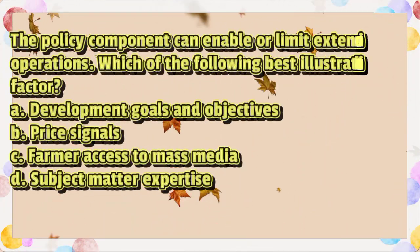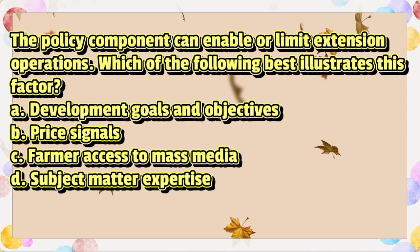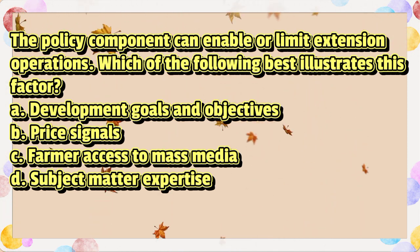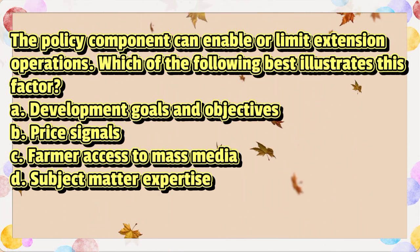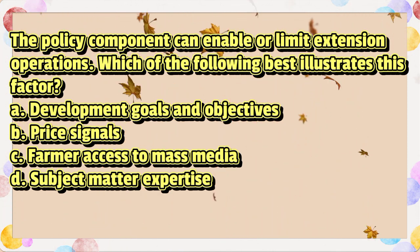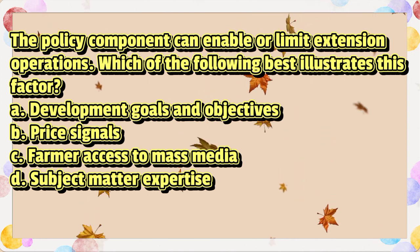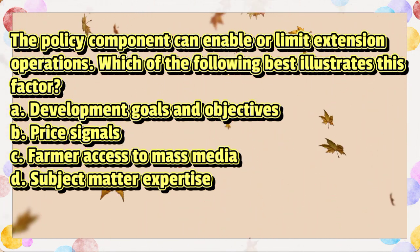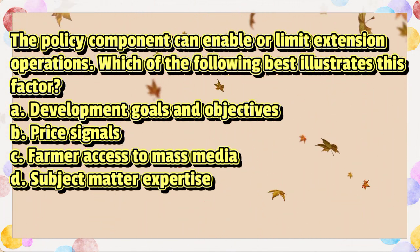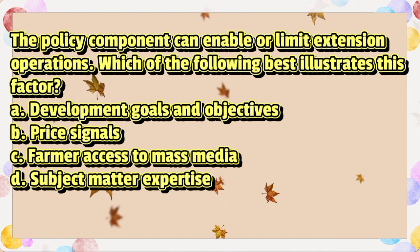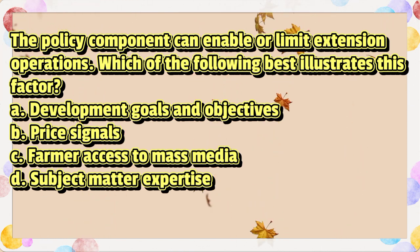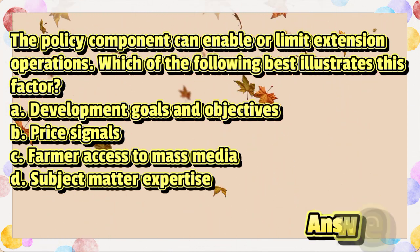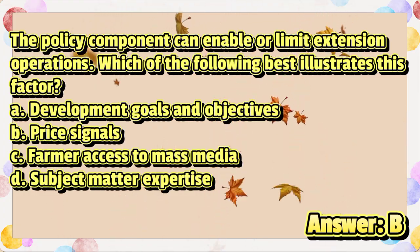The policy component can enable or limit extension operations. Which of the following best illustrates this factor? A. Development goals and objectives. B. Price signals. C. Farmer access to mass media. D. Subject matter expertise. The answer is letter B.